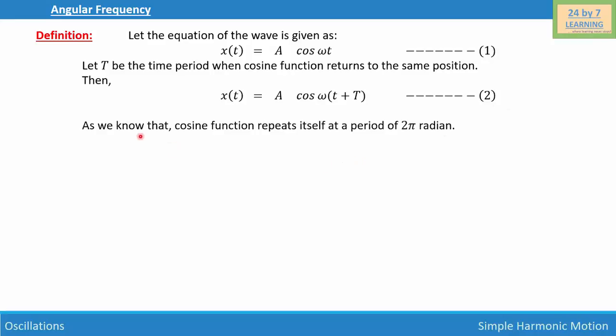As we know, the cosine function repeats itself after an interval of 2π radians because 2π is the periodicity of the cosine function. Then we can definitely write ω(t + T) = ωt + 2π.